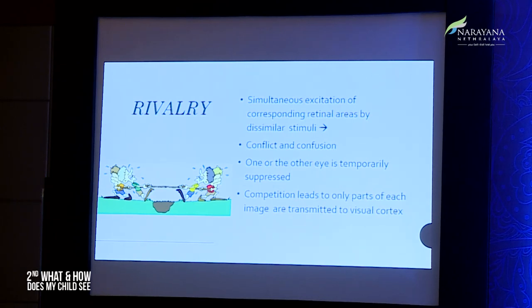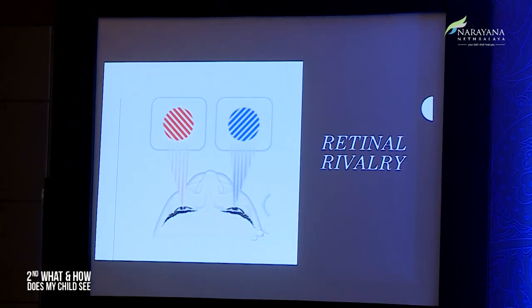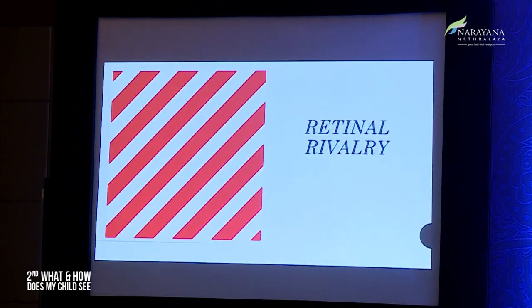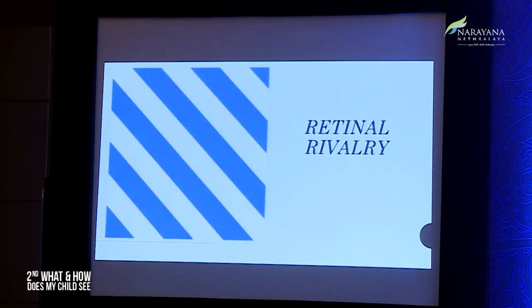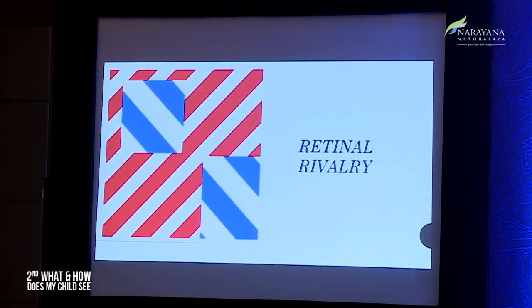In retinal rivalry, there is simultaneous stimulation of corresponding retinal areas with conflicting images. For example, if the right eye sees blue stripes and the left eye sees red stripes, in retinal rivalry the patient sometimes sees red stripes, sometimes blue stripes, and sometimes a mixture of the two — switching over time. Retinal rivalry is said to occur before suppression — before suppression sets in, there is usually retinal rivalry, and when suppression is reversed, retinal rivalry can also occur.